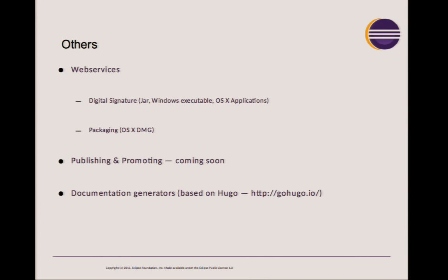Another service is packaging: in macOS, you often install things from a DMG file — basically a nicely integrated zip of the application. We now provide a service to package your app into a DMG. Many people want MSI files for Windows, but nobody has stepped up to implement it yet — so we don't have it yet, but if you want to contribute, just open a bug.